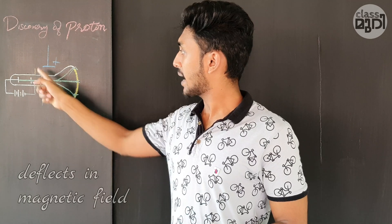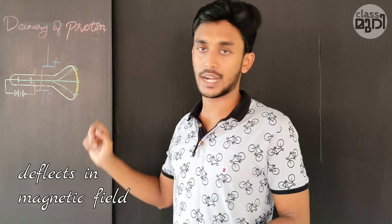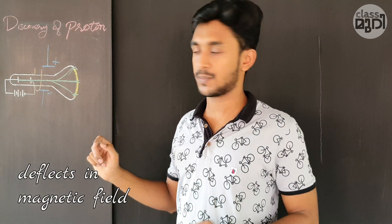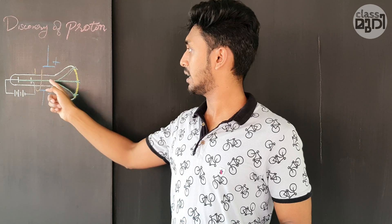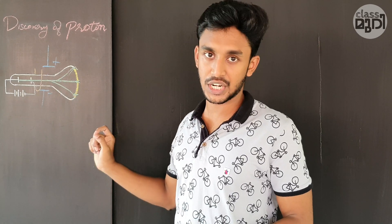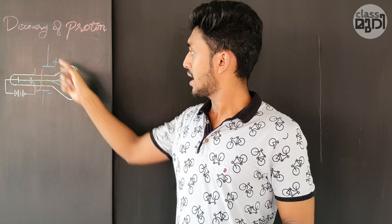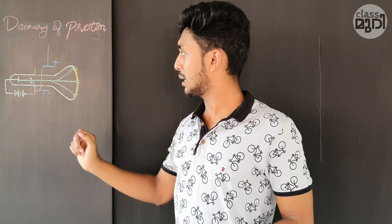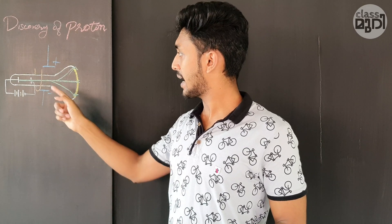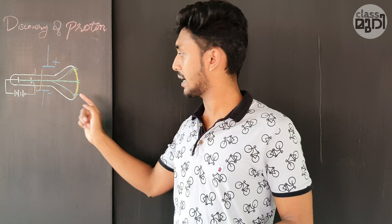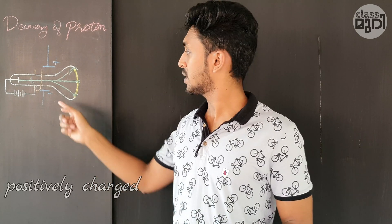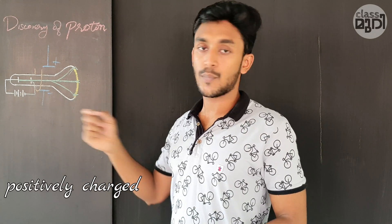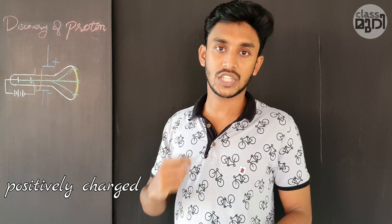This is the deflection effect. In a magnetic field, there is deflection. The rays are deviated toward the negative side, which means they are positively charged.